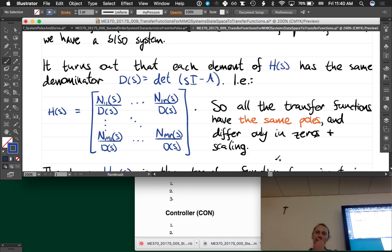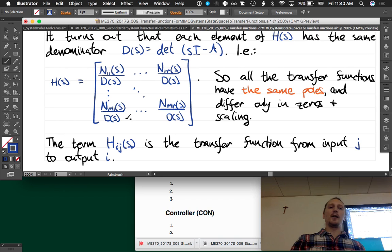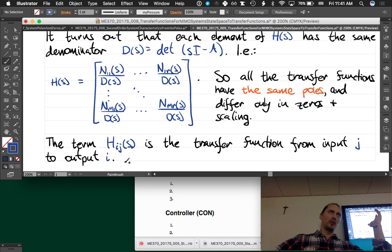So what I've written here is a general matrix expression for each of these transfer functions. The term H_ij, so we list the row first and the column, so the ith row and then the jth column, is the transfer function from input j to output i. So if you have this system that's got 15 inputs and 15 outputs, you might only care about maybe two of the transfer functions, how does this one input affect this one output.